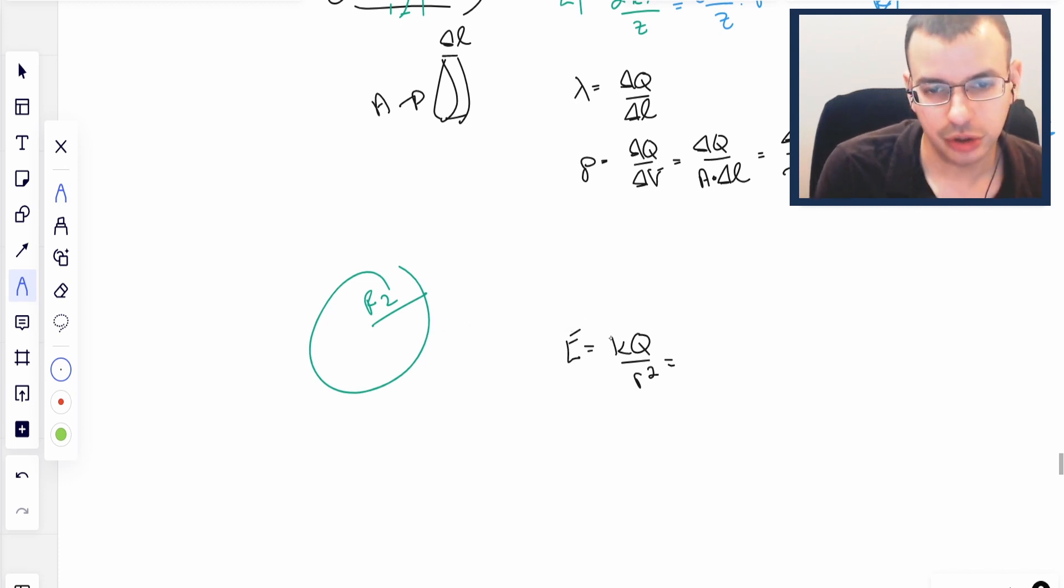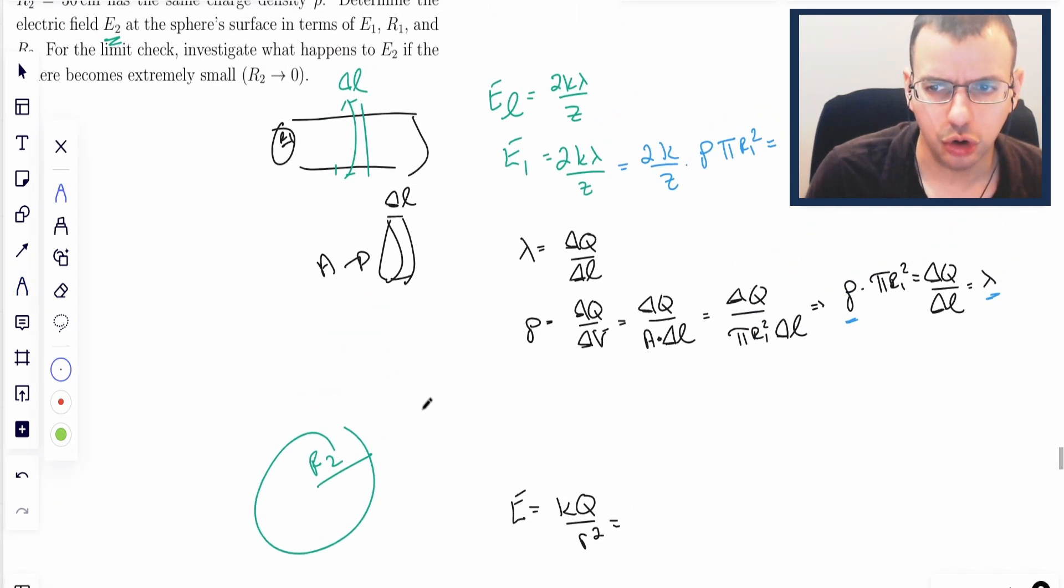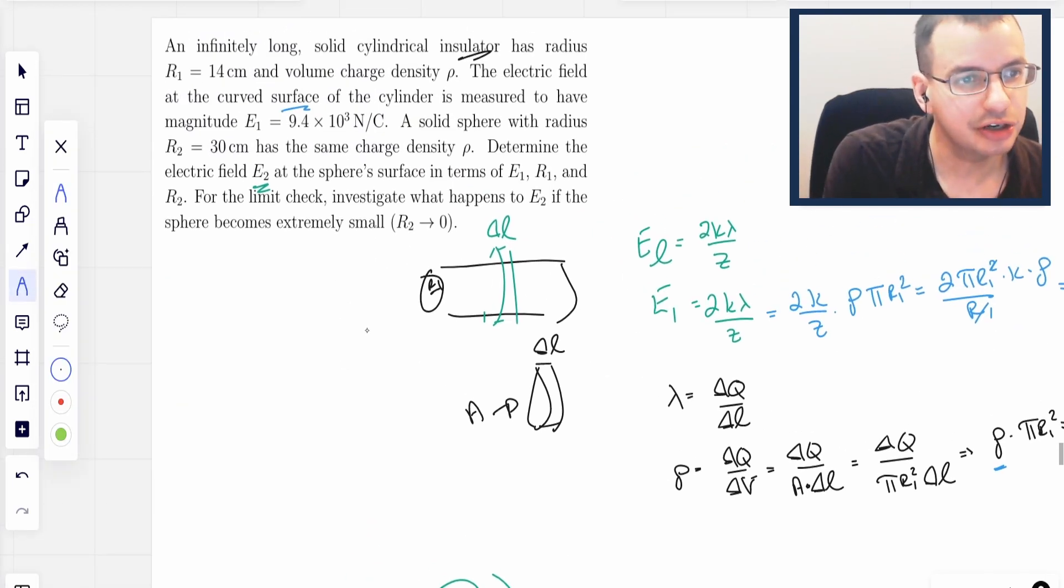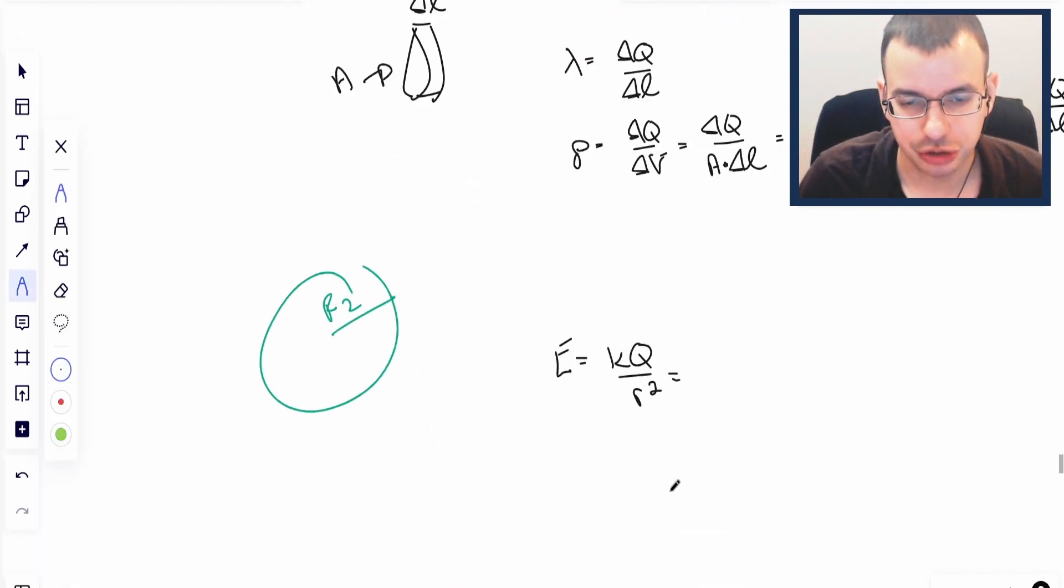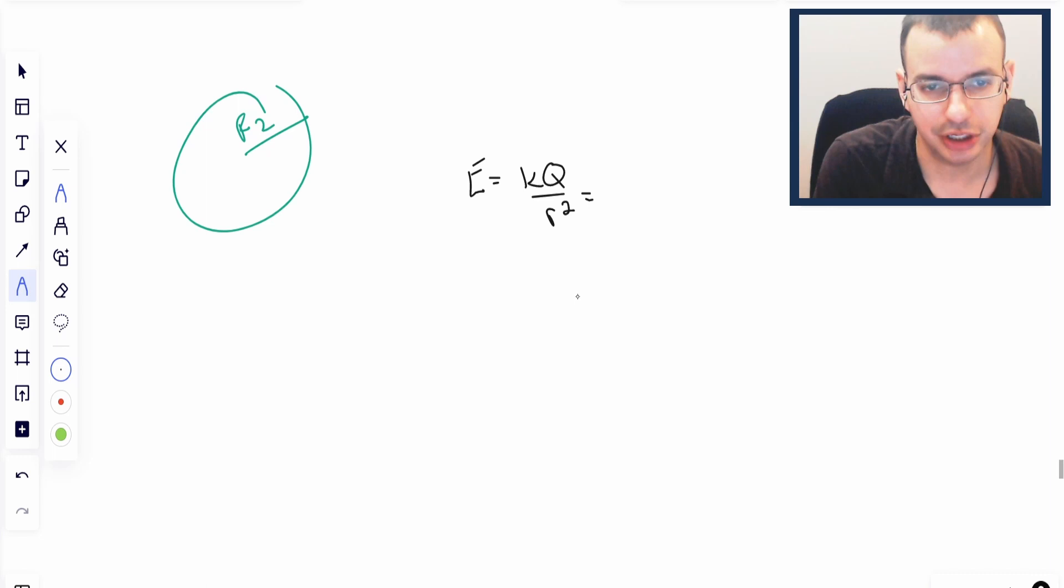This R squared is going to be R2. And we want to use rho, because we're told that the sphere is made of the same charge density as the cylinder. So we want to incorporate rho to find a relationship.